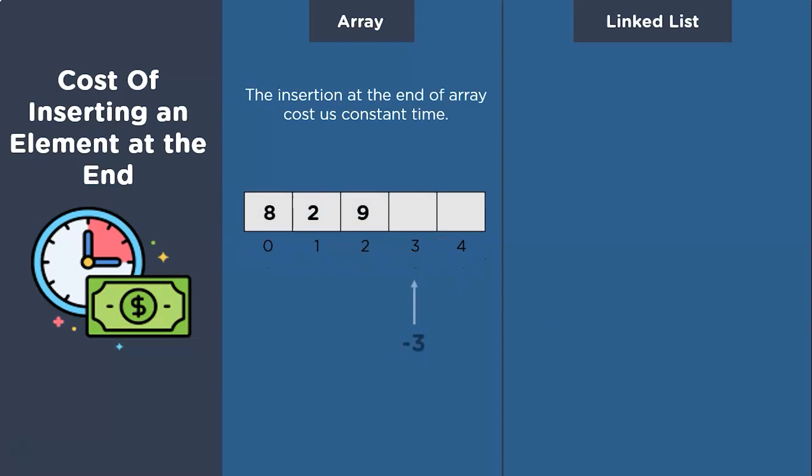Next up is the cost of inserting an element at the end. For this insertion to happen in the array, we will face O(1) time complexity as arrays need constant time to access any of their indexes. For example, in this representation of an array, inserting an element at index 4 will just cost us O(1).